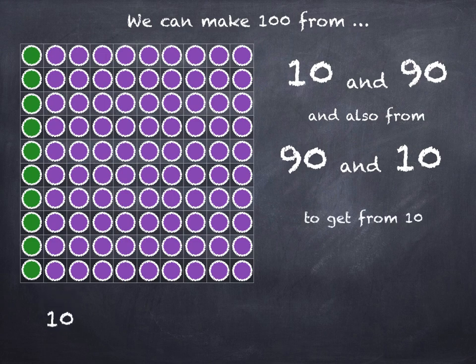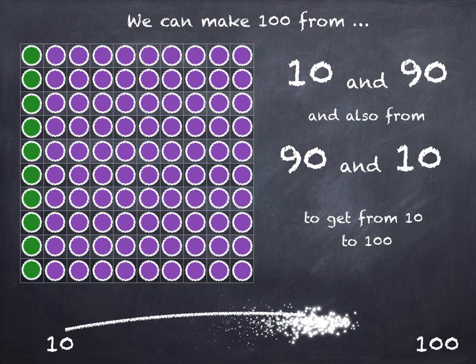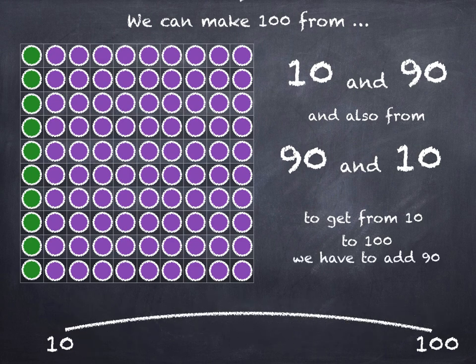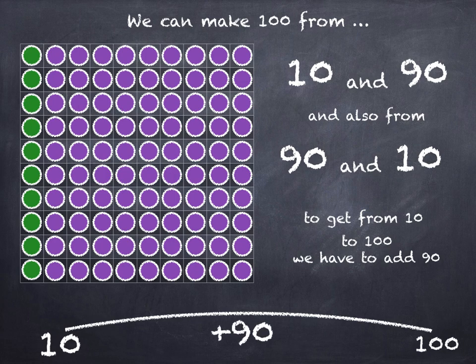To get from 10 to 100, we have to add 90. 10 plus 90 is 100.